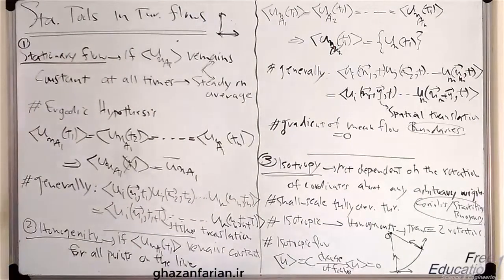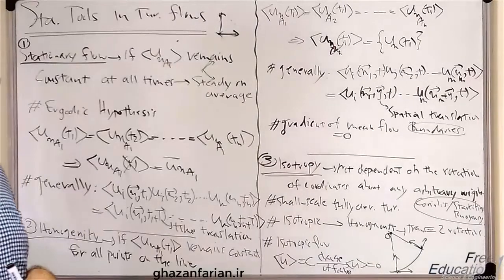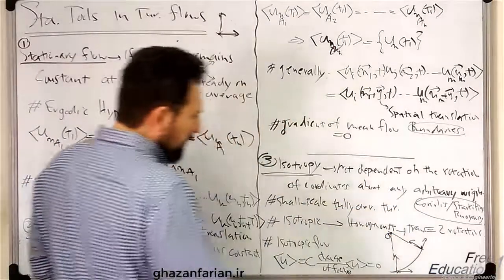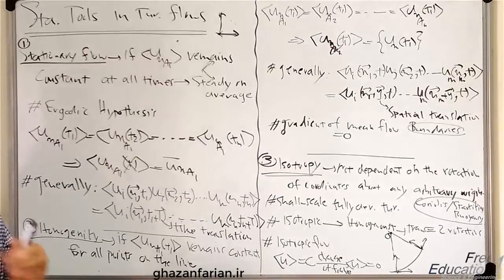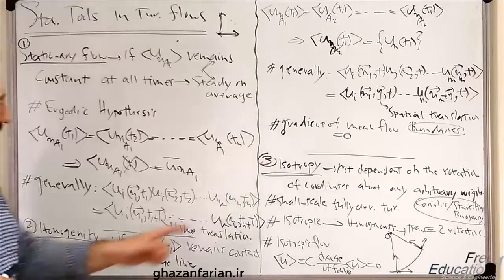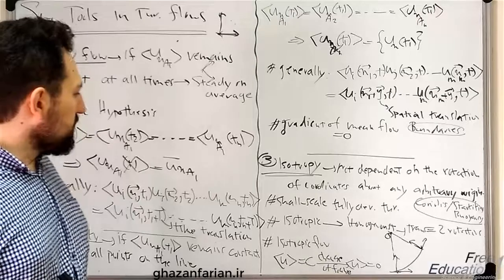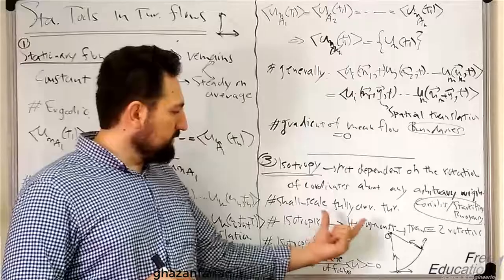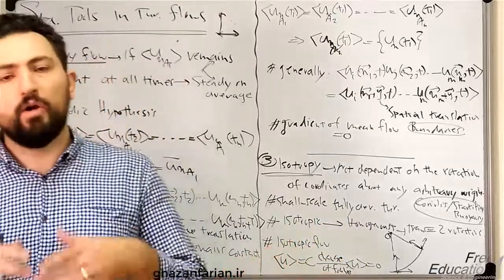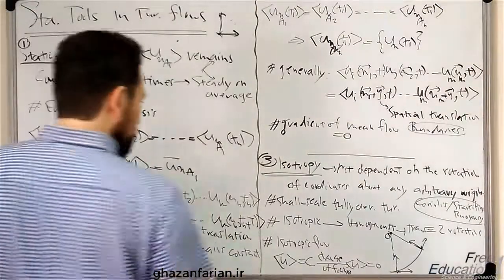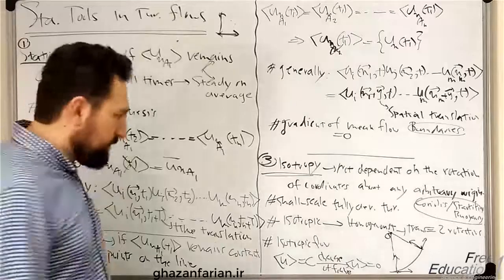Coriolis effects or stratified flows break the isotropy of turbulent flows. In small-scale, fully developed turbulent flows, we use isotropy to explain the flow behavior — it is a good presumption. Another point is that any isotropic flow is homogeneous, but the reverse is not true. We can have homogeneous flows which are not isotropic, but if the flow is isotropic, it must be homogeneous.